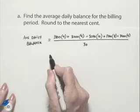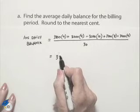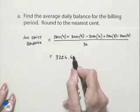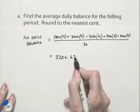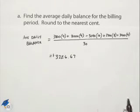Using the calculator gives us a value of $3,226.67, rounded to the nearest cent. That's our average daily balance.